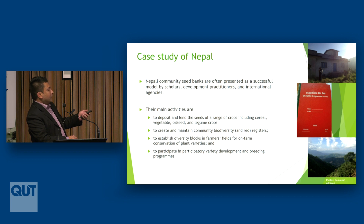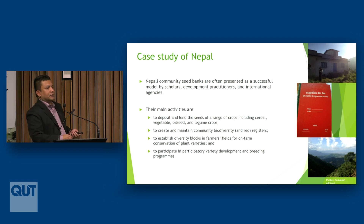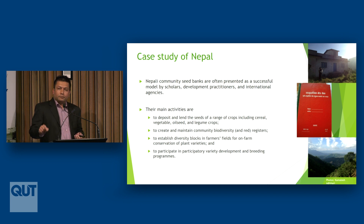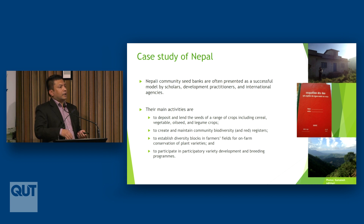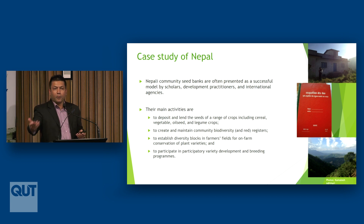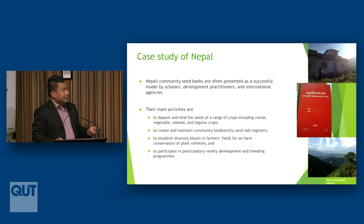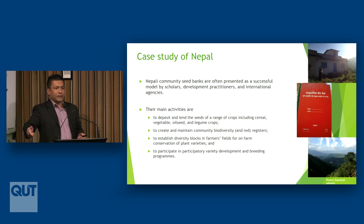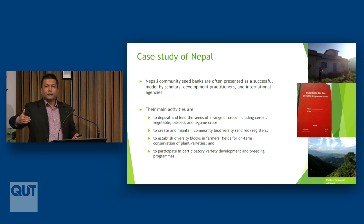Another important activity of community seed banks is to create and maintain community biodiversity registers, which list what native biological and genetic material exists in local areas along with associated traditional knowledge. It is a detailed documentation that communities develop in their own local language and maintain themselves. They also create rate registers to periodically review the status of community seed banks, tracking for example the rate of disappearance of certain crop types over two or three years.